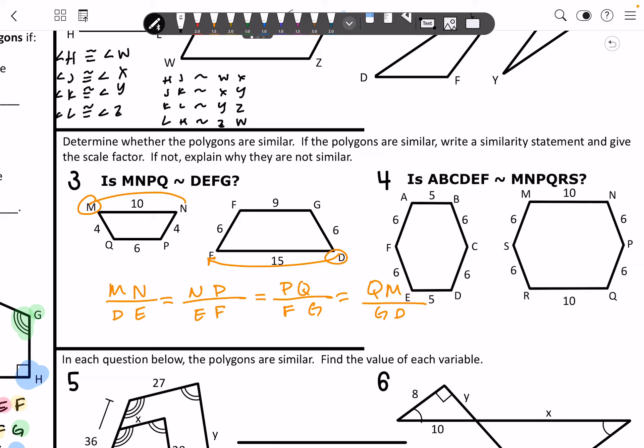So I've got MN which is 10, DE which is 15. So if we simplify that, that gets us 2 thirds.